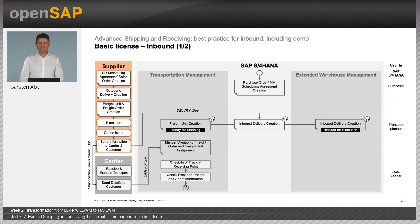Usually you have a purchase order created that is reflected in the sales order creation in the supplier system. After the complete supplier process is over, the goods issue is posted and the ASN is sent out. In the basic license, we have no consignments. That means the ASN is sent with the delivery IDOC, and an inbound delivery is created along with the freight unit. After the inbound delivery is created and we have a freight unit assigned, the carrier can send the respective freight order information to assign the freight units to the freight order. After transportation execution starts, the check-in of the truck can be done at the receiving point, and the transportation papers and delivery notes can be checked. In case the EDI sends different information than what is on the papers, this needs to be reflected in the system. This process is called the Administrative Goods Receipt process.